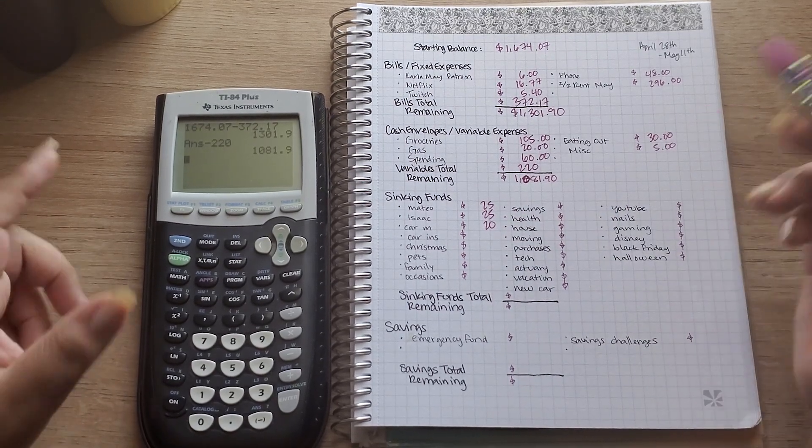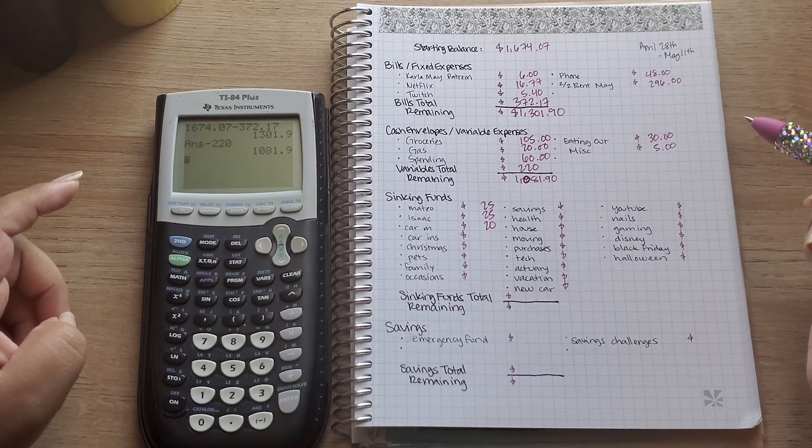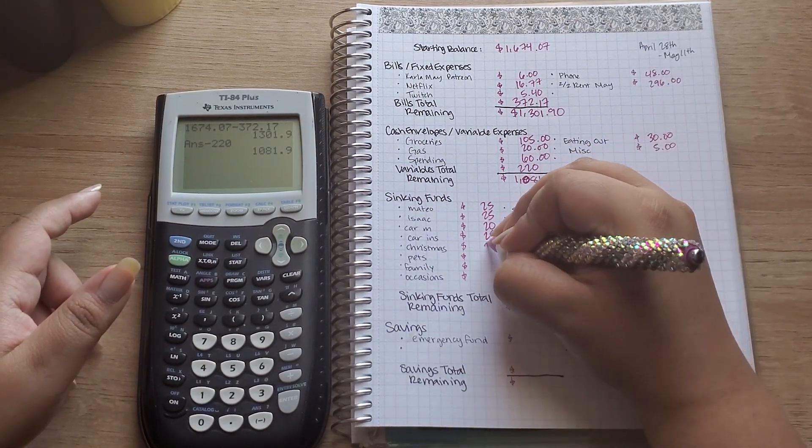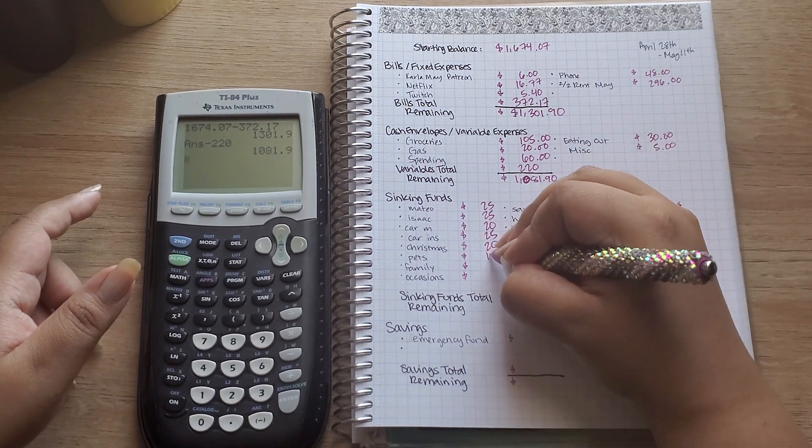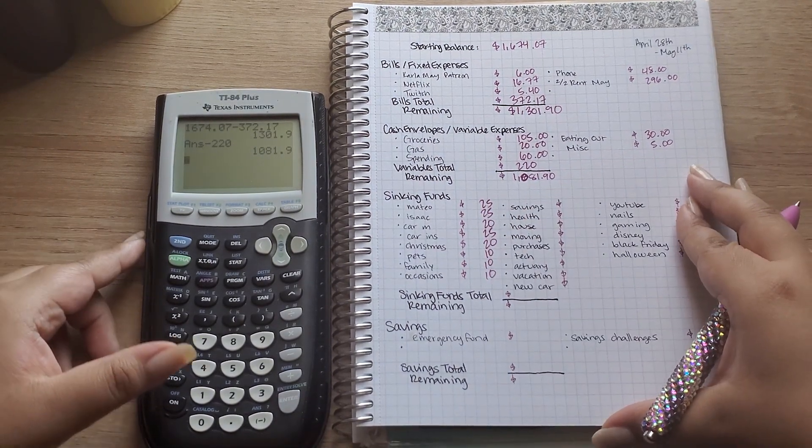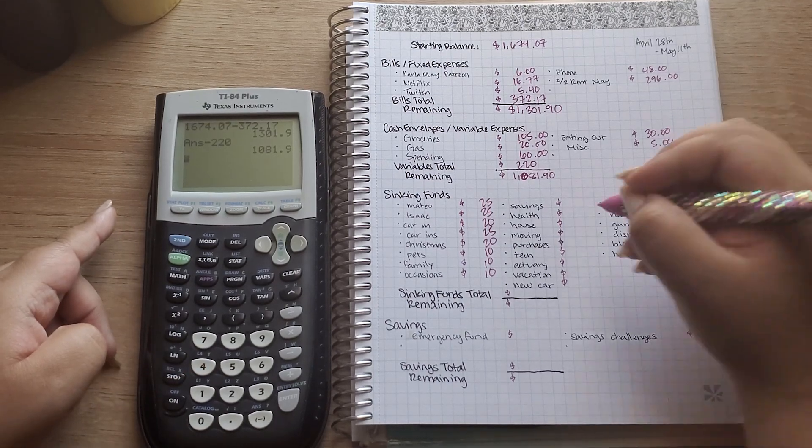Okay, car insurance I'm gonna put $25, Christmas is gonna get $20, and then pets, family, and occasions it's just gonna get $10. So next up is my savings, savings is just going to be getting $10.